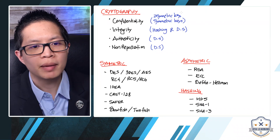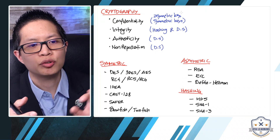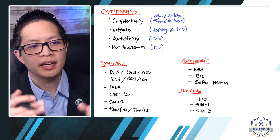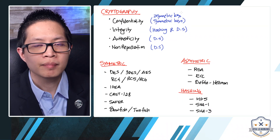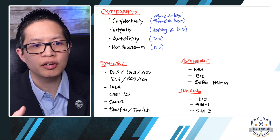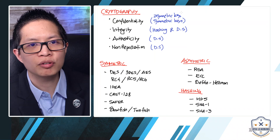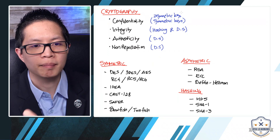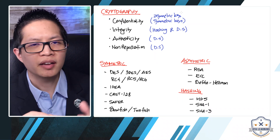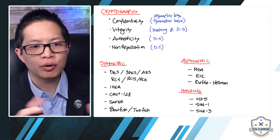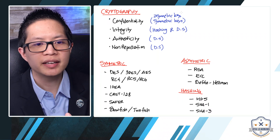For symmetric key algorithms, the ones typically used are DES, 3DES, AES, RC4, RC5, and RC6. If you see RC4 mentioned, you know it's symmetric encryption. The difference between symmetric and asymmetric: symmetric uses private keys only, while asymmetric uses a public and private key pair. For asymmetric, there are three algorithms: RSA, ECC, and Diffie-Hellman — Diffie-Hellman is typically used for VPN solutions.